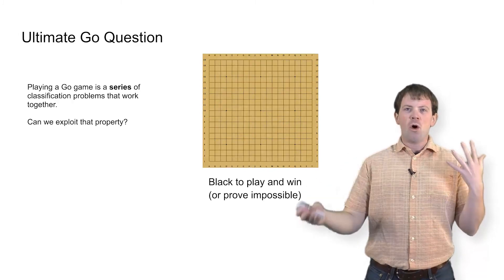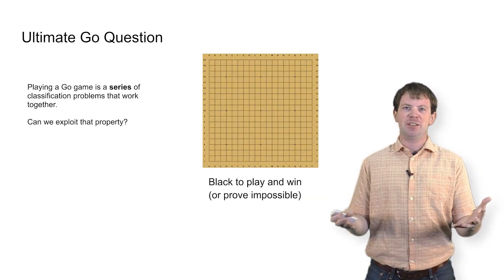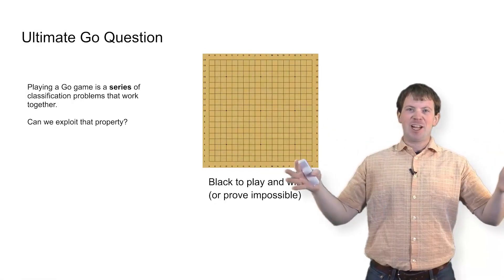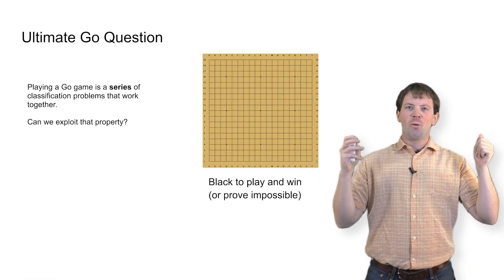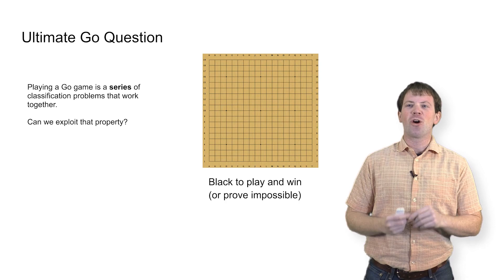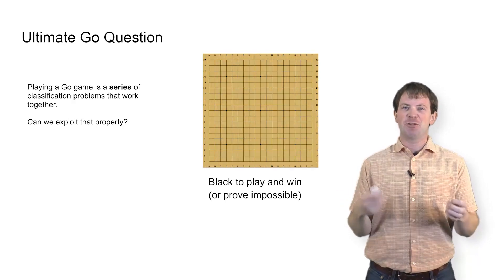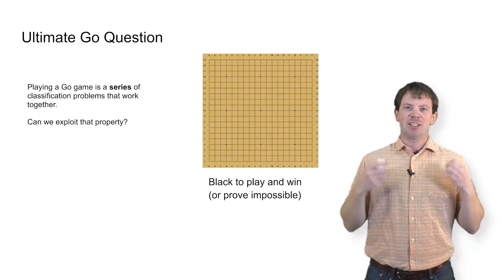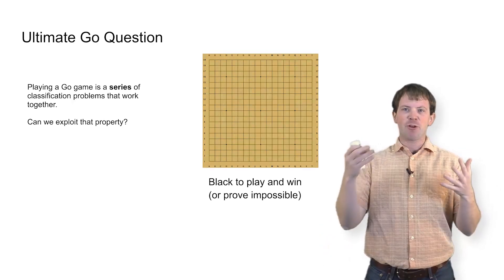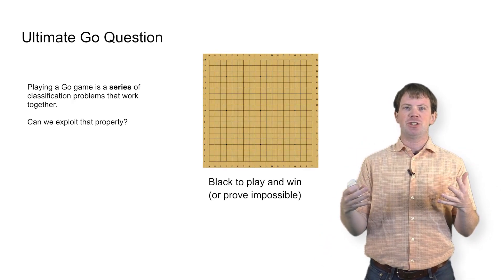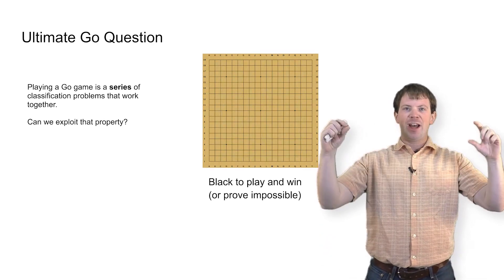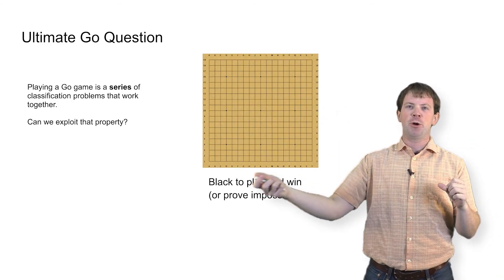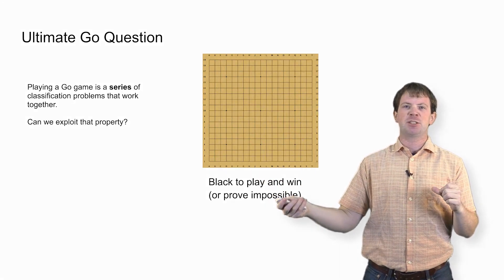The ultimate Go question for a machine playing Go program is: given a blank board, how do I play and win? Or if you're white, how do I defend against black winning? That's the high-level idea — every move we want to take this vector that encodes the position of the board and output the next move to make.